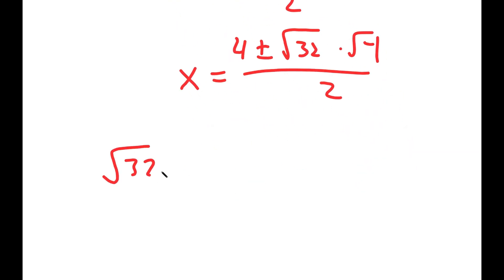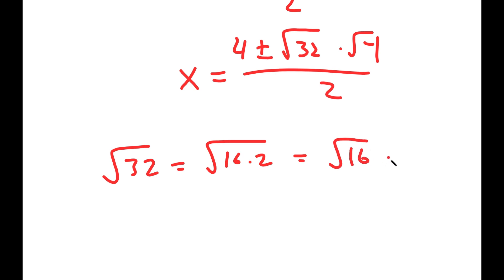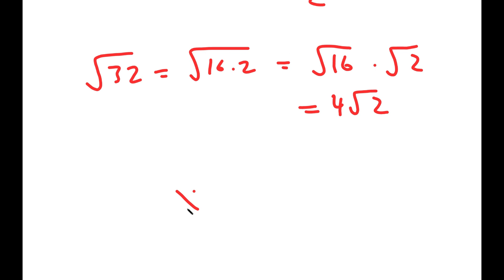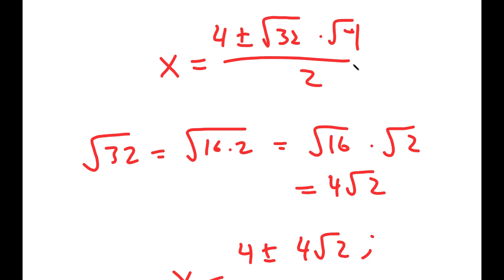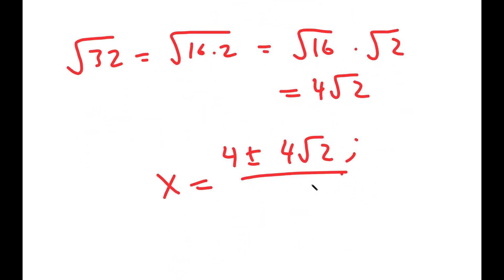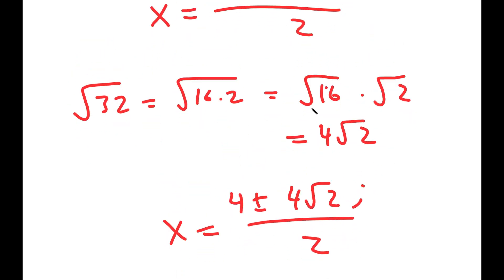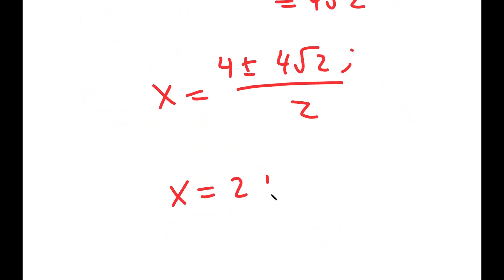I'm going to simplify the square root of 32, which is equal to the square root of 16 times 2, which is 4 root 2. So I get x is equal to 4 plus or minus 4 root 2i — where i is the square root of negative 1 — over 2, which is equal to 2 plus or minus 2 root 2i.